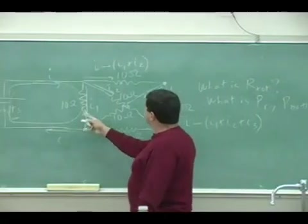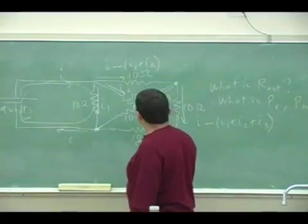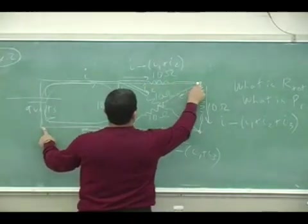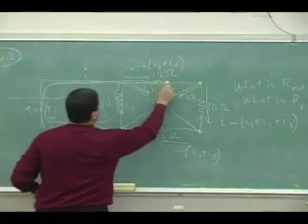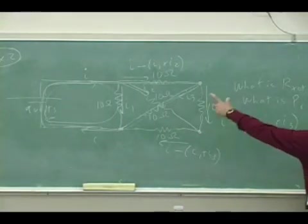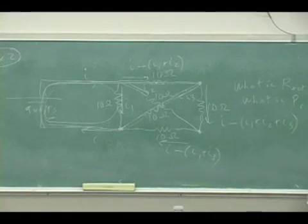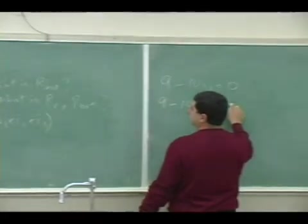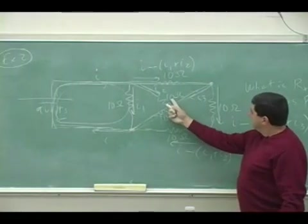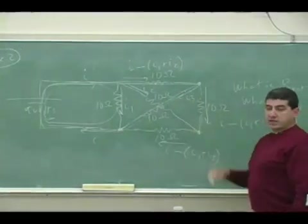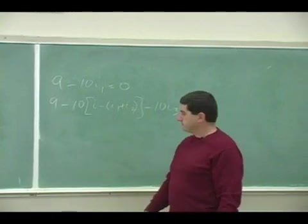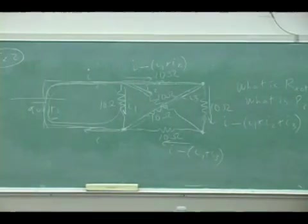Then the other one I can go across this way, down this way, and then across. So I'm going this way and then down this way. Nine minus 10 times I minus I1 plus I2. That's the horizontal one. Then go down the diagonal, negative 10I3. Equals zero. So that's my second equation.